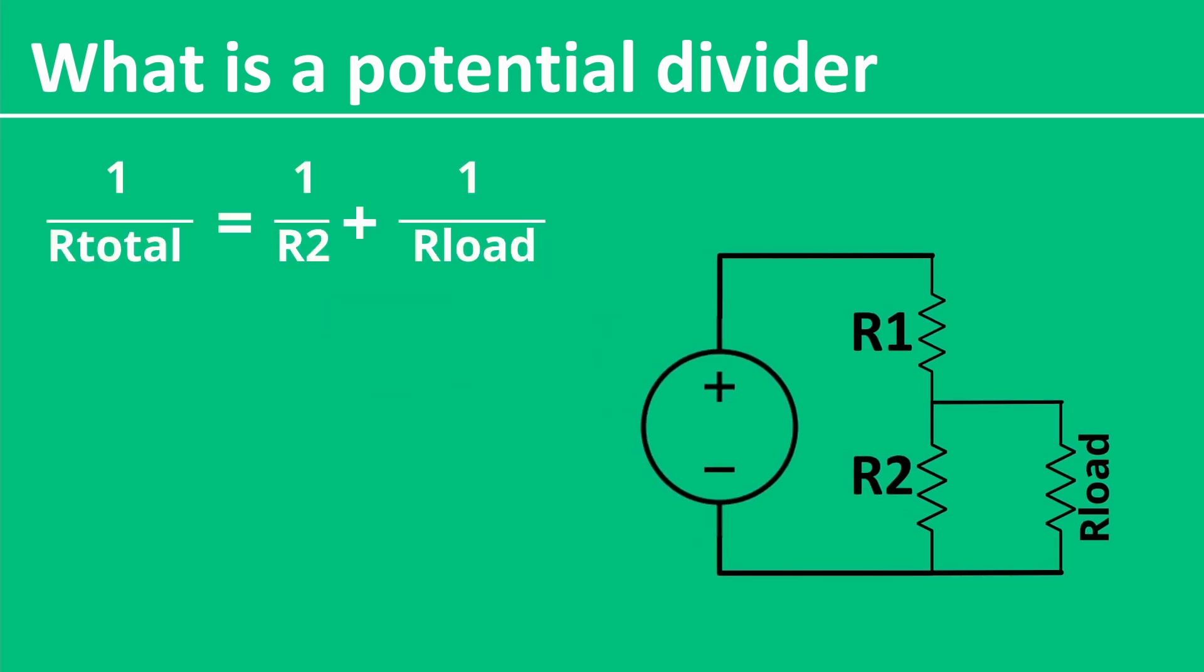The formula for resistors in parallel is quite simple. 1 over the total resistance equals 1 over R2 plus 1 over R load. We can rearrange this by taking both sides to the power of negative 1, and thereby flipping the fraction. As R total over 1 is simply R total, we can rearrange this formula to be R total equals 1 over R2 plus 1 over R load to the power of negative 1.